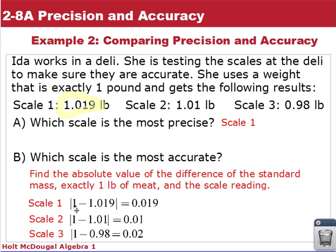So in determining the absolute value, scale one, everyone starts with exactly one pound weight. Take one pound minus the difference on the scale readings and absolute values. So it's a positive value. And we can see from here that scale two has the smallest difference there, point zero one.